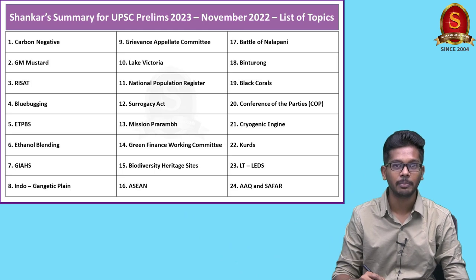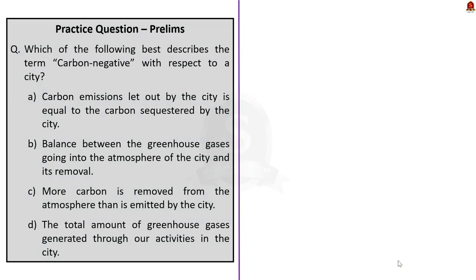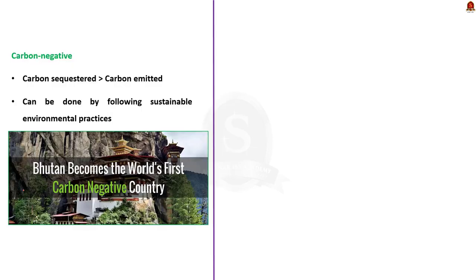These are some of the important topics from the November 2022 current affairs. Our first question asks for the best description of the term 'carbon negative' with respect to a city. The correct answer is option C. The term carbon negative refers to the removal of more carbon from the atmosphere than the amount of carbon we emit.